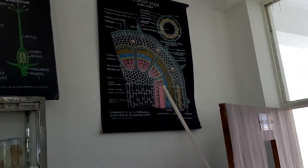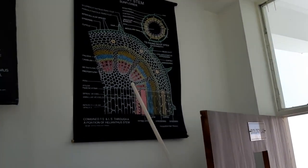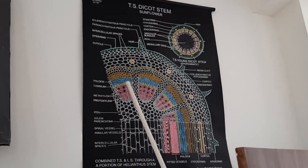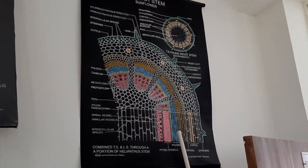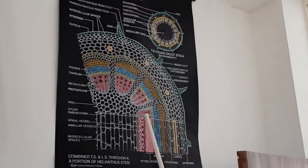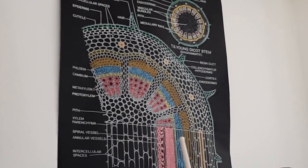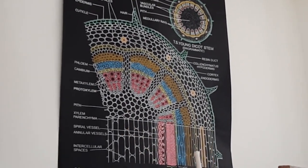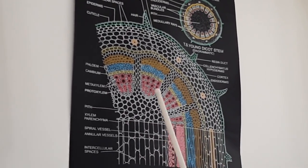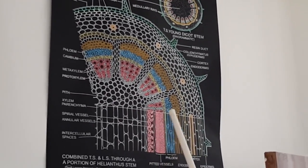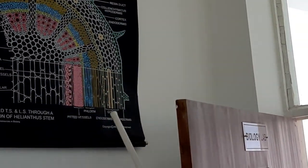This chart shows the transverse section (T.S.) of a Dicot stem. You might say this stem doesn't look like this, but it is showing the anatomy of a part of the stem — how the various tissues are arranged inside. The study of tissue arrangement comes under anatomy.